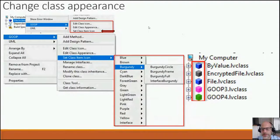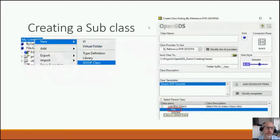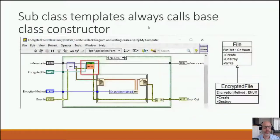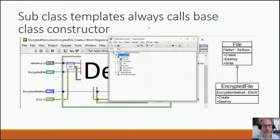Creating a subclass or child class from a parent class: you right-click on your existing class, select New, then GOOP Create, and the right class type — that creates a child class from the parent. Or when creating a brand new class you can select which parent you want to inherit from further down. Our subclass templates always call the base class constructor inside, so this encrypted file class inheriting from File will always call the File creator to initialize itself.